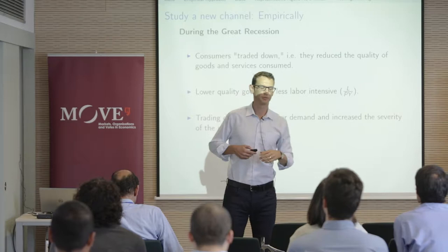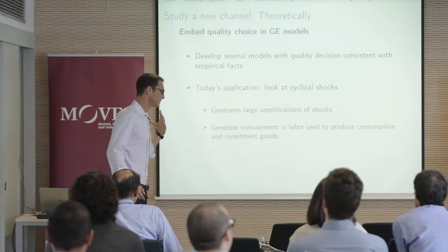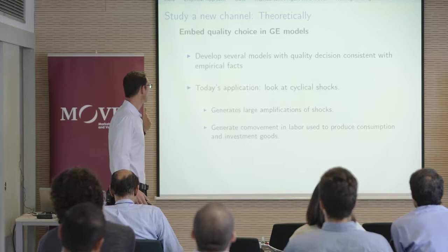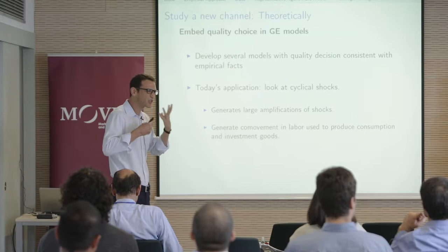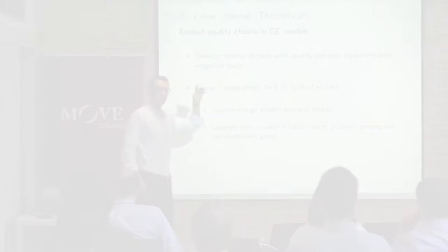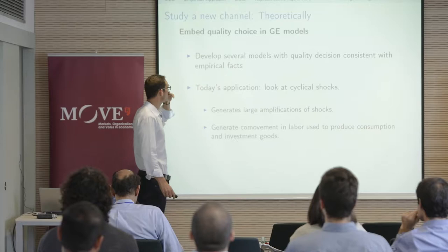We'll have some back-of-the-envelope numbers for that. On the theoretical part, this is going to be accounting. I want to get a sense of the mechanics of the model. The question is whether this intuition can survive an equilibrium argument, both in partial equilibrium and general equilibrium. I'm going to embed quality choice in several GE models — models with quality decisions consistent with our empirical facts.